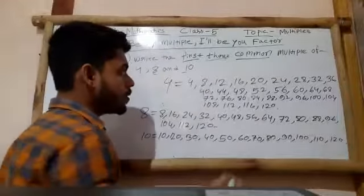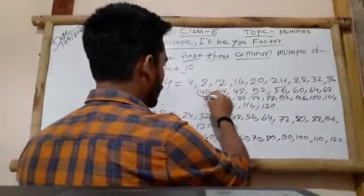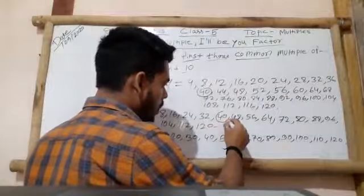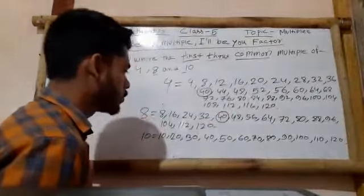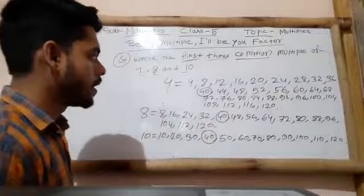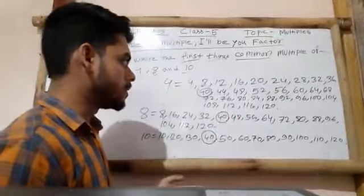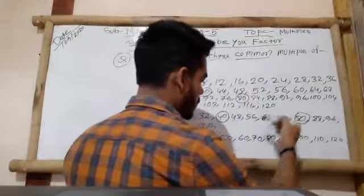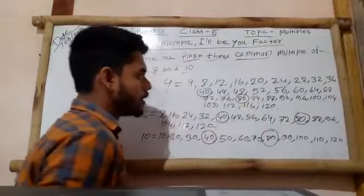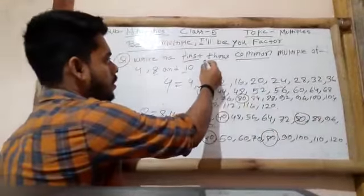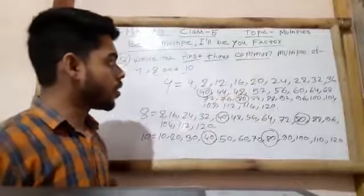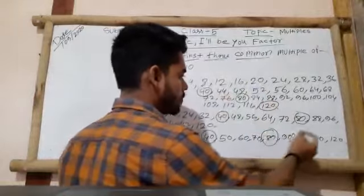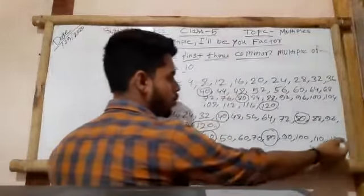As you can see, 40 is present in the multiples of 4, 40 is also present in the multiples of 8, and it is also present in the multiples of 10. Another common multiple of these three numbers is 80 — 80 is also a common multiple. And since we need to determine three common multiples, the last one is 120 — 120 is also a common multiple of 4, 8, and 10.